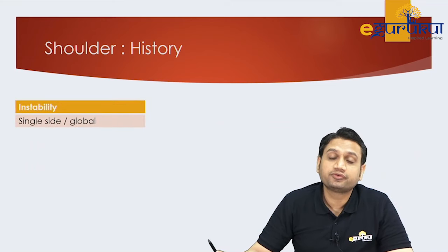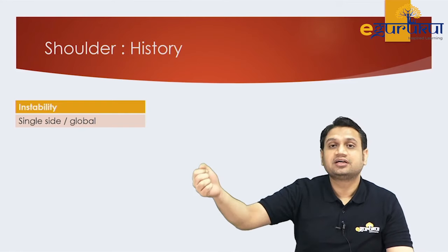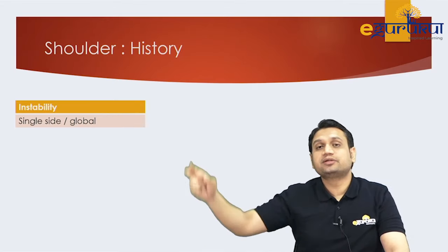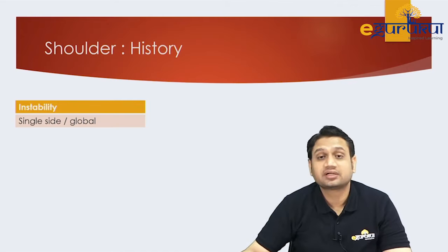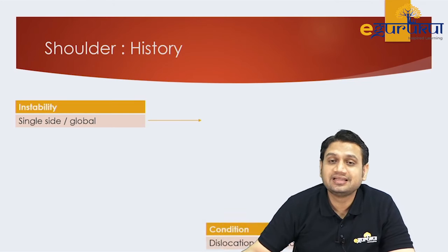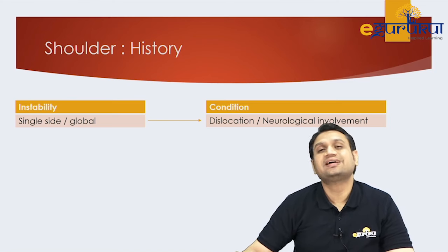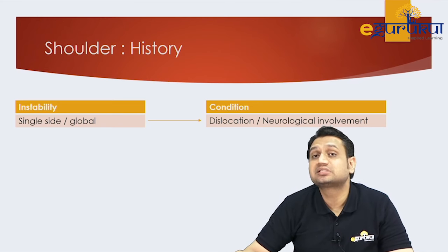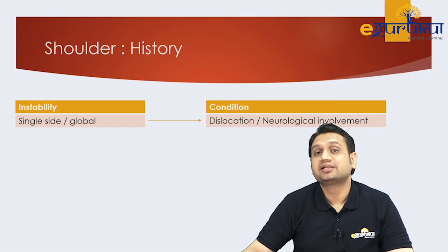Another complaint is instability — the patient may say they feel their shoulder will dislocate when lifting weight or throwing a ball. Ask whether instability is on a single side or in all directions. Single-sided instability usually indicates a specific type of dislocation — anterior, inferior, or posterior. If instability is global in all directions, it likely indicates neuromuscular involvement.